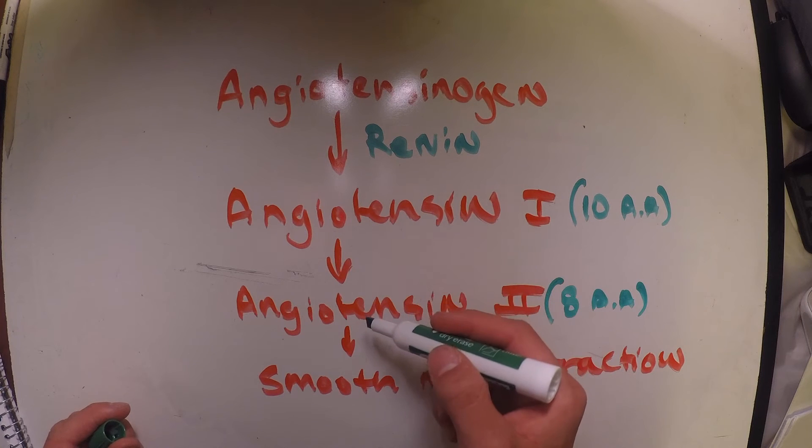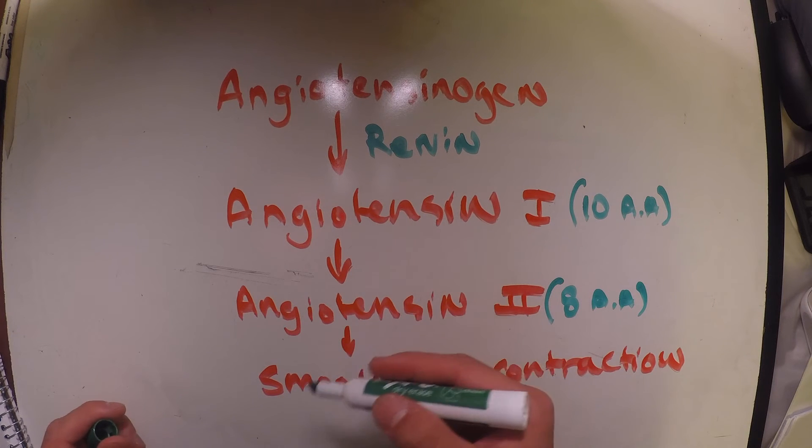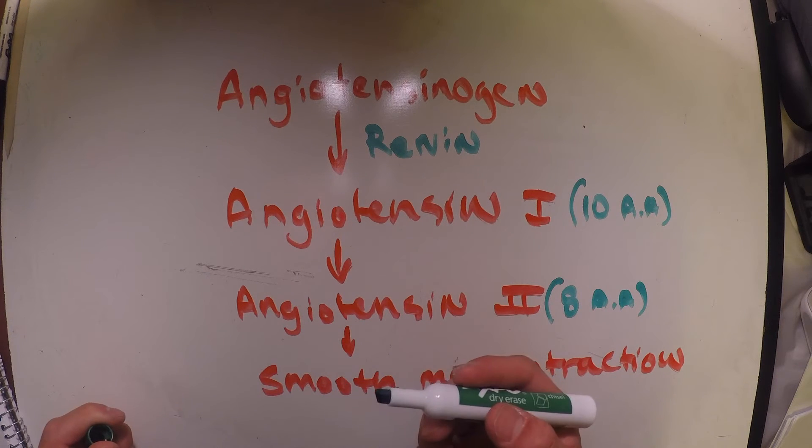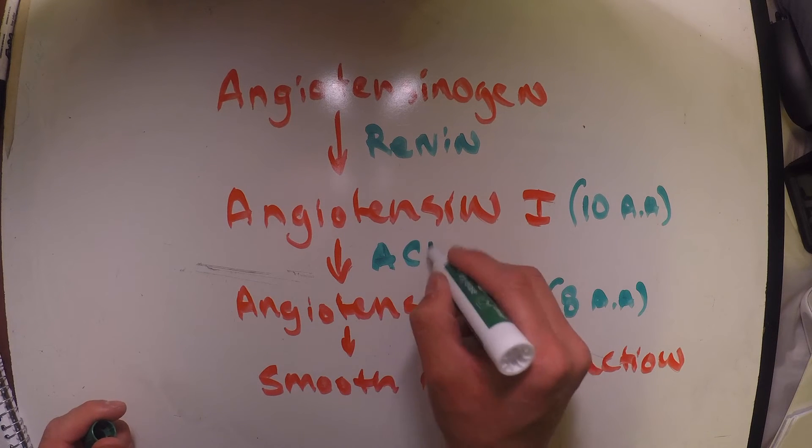To convert that, we're going to release something known as angiotensin 1 converting enzyme, and I'll abbreviate that as ACE.